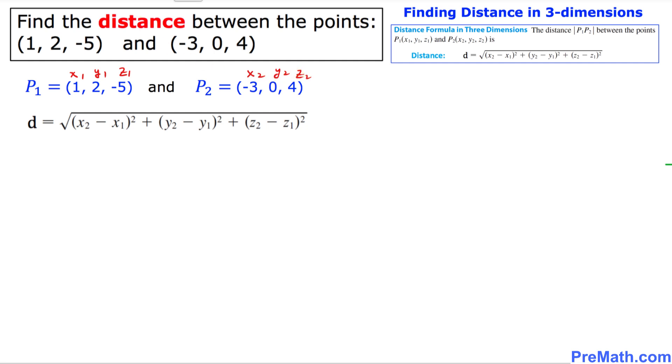And let's go ahead and fill in the blanks in this formula. So distance D equals, let's replace x2 by, in our case, x2 is negative 3. So negative 3 minus x1 is simply 1, squared, plus y2 in our case is 0